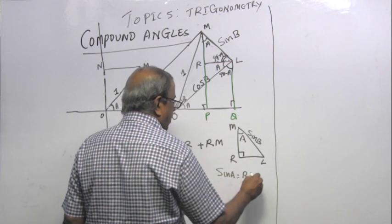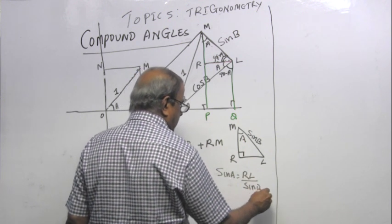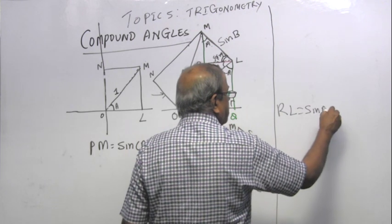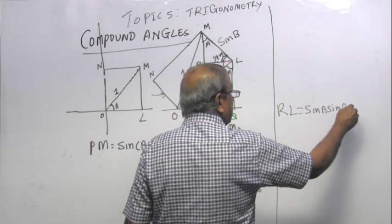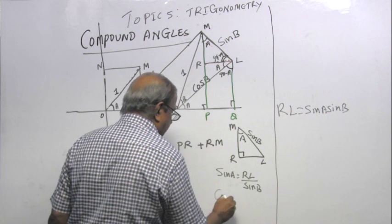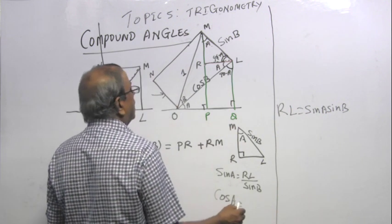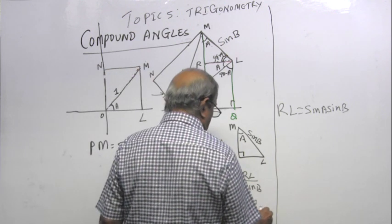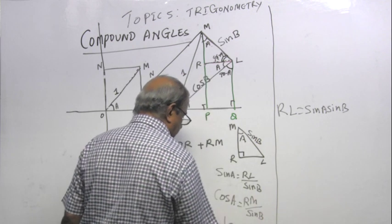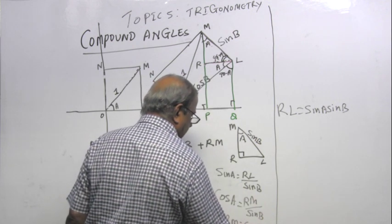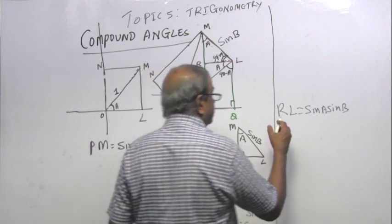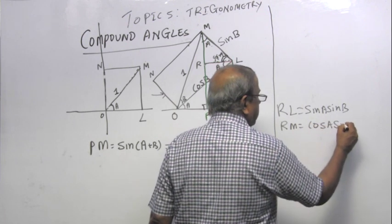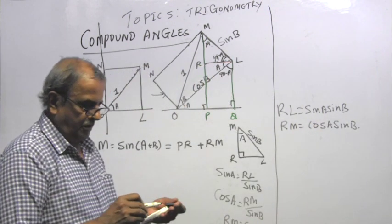What is sin A from there? Sine A is RL over sin B. So can I say RL equals sin A sin B. Cos A equals RM over sin B. So can I say RM equals cos A sin B.